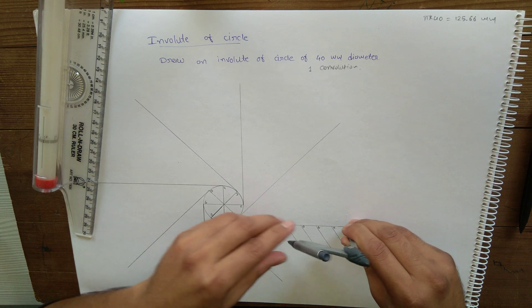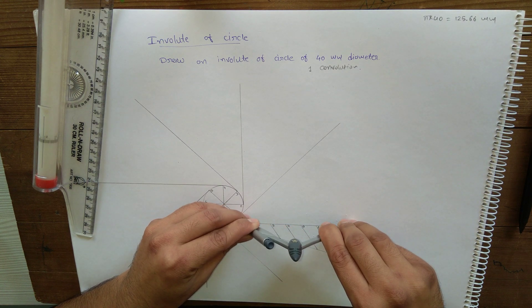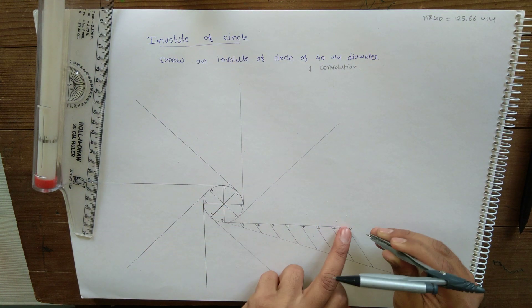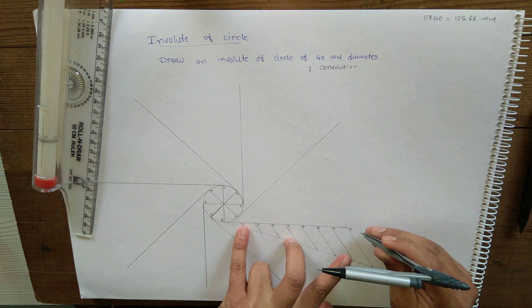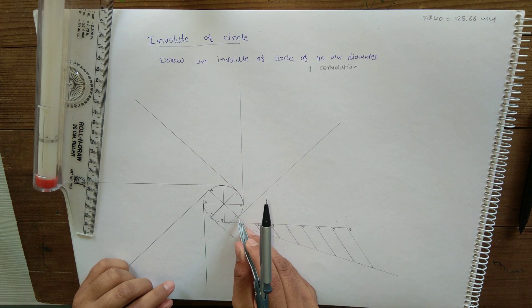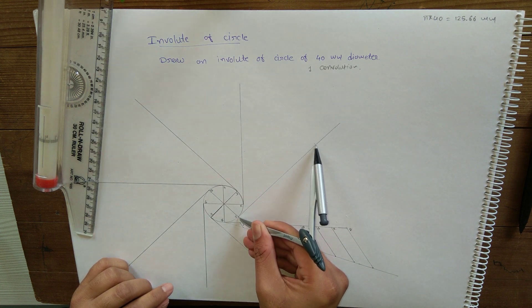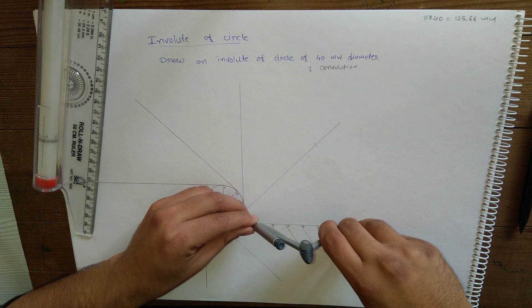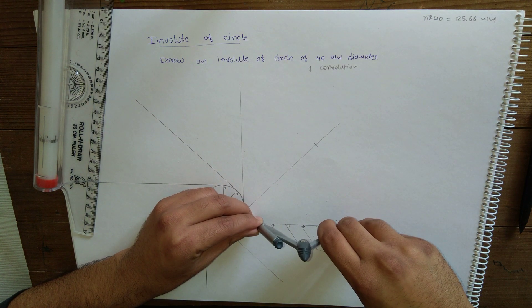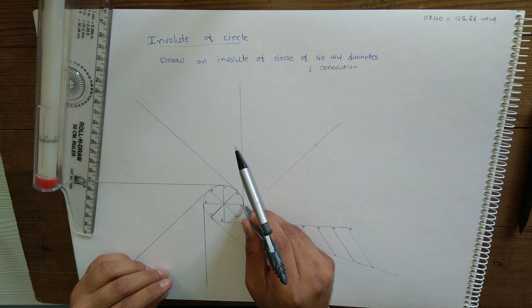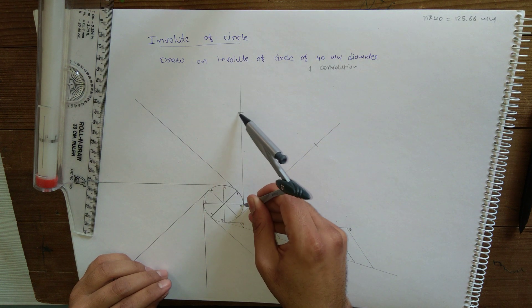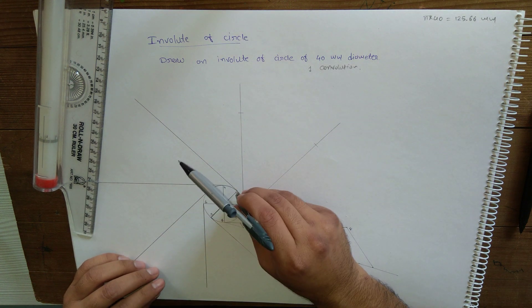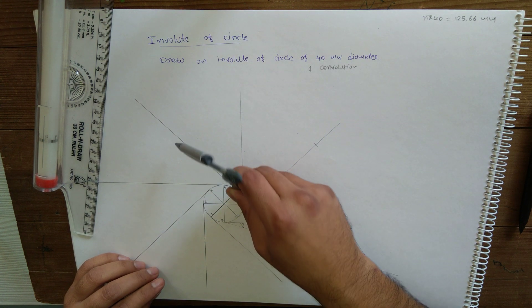So first I will take length from 8 to 1 and putting the center on one will mark one arc. Then 8 to 2 and with center 2 I will mark another arc. 8 to 3 and center 3, you can keep on doing this.